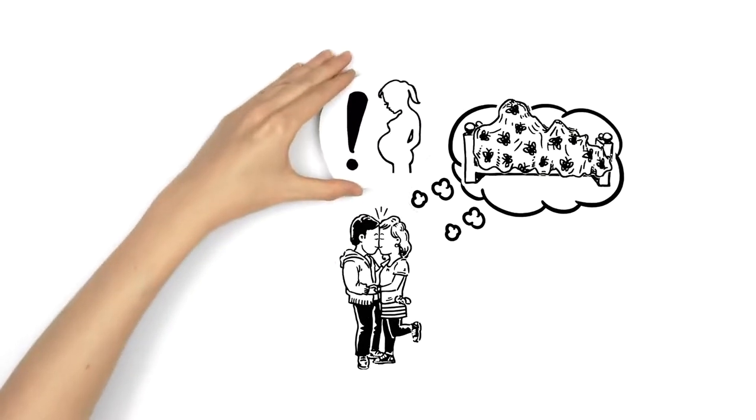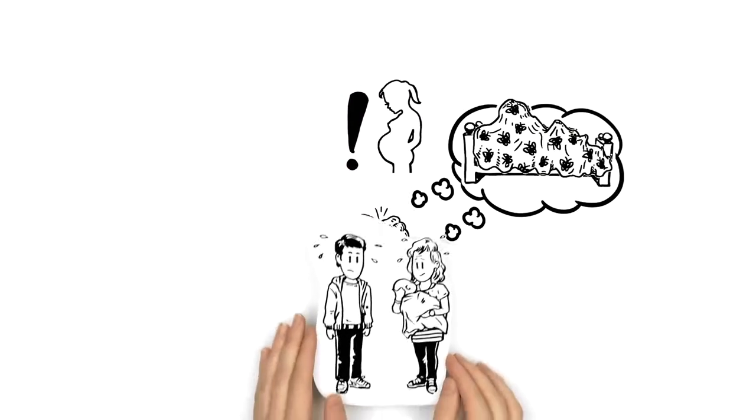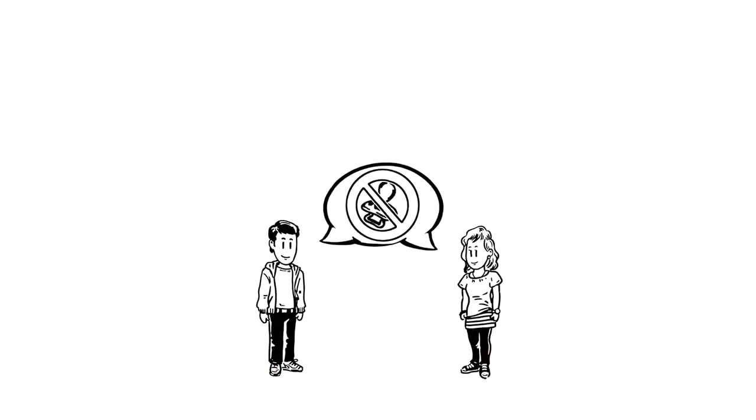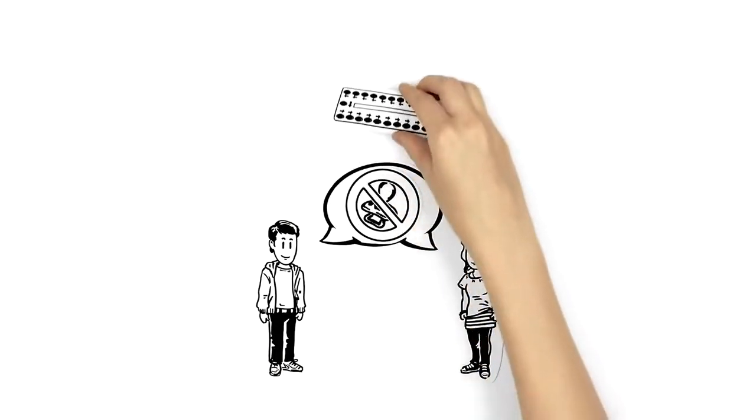Of course they know about the risk of pregnancy, but they consider themselves way too young to have a child. Because of that, talking about contraception before their first time is important.